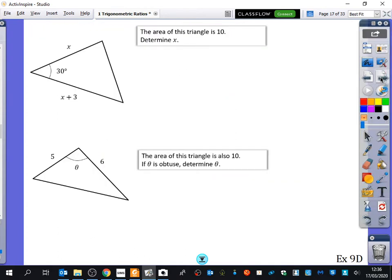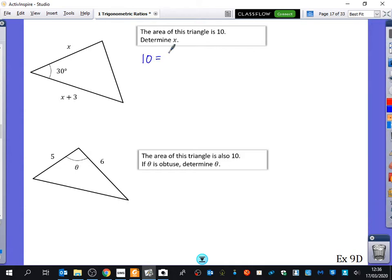So I'm just going to do two examples and then you're going to do some practice as homework. They've told us that the area of this triangle is 10 and we're going to determine x. So we know that the area is equal to a half multiplied by x multiplied by x plus 3 multiplied by the sine of 30. So that's 10 equals a half x, x plus 3. What's sine 30? A half. So I've got here actually a half times a half is a quarter. So I'm going to multiply both sides by 4. So I get 40 equals x, x plus 3.